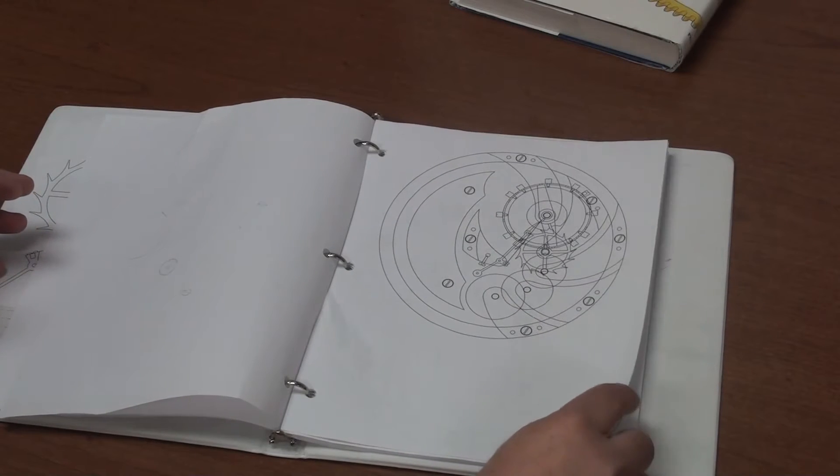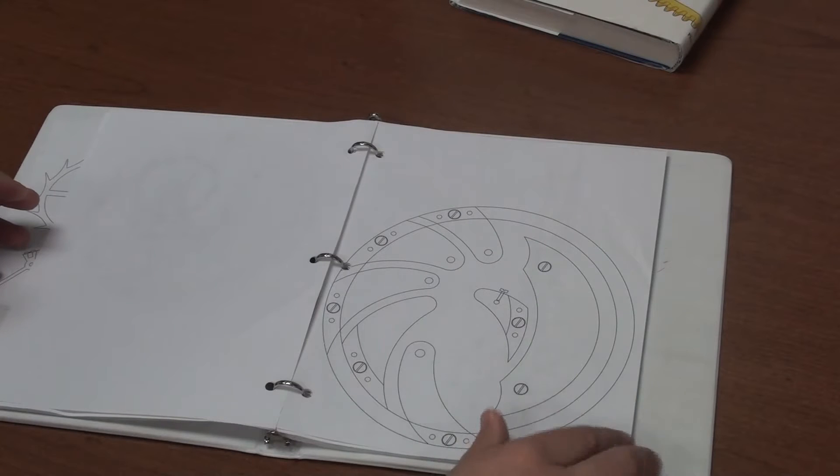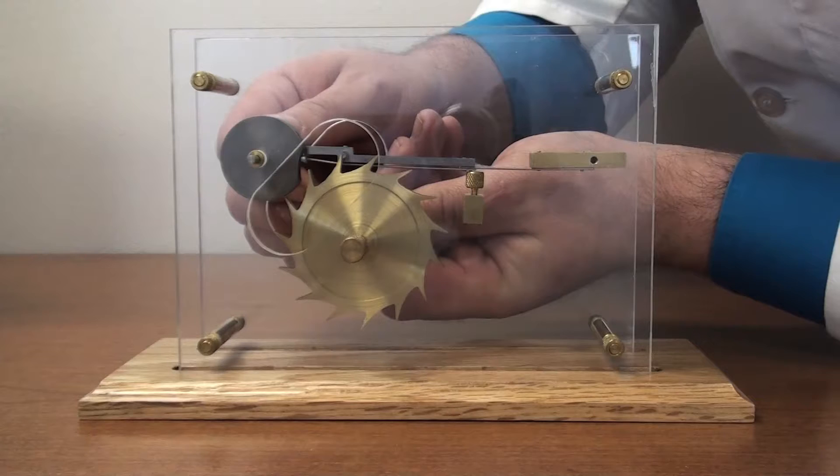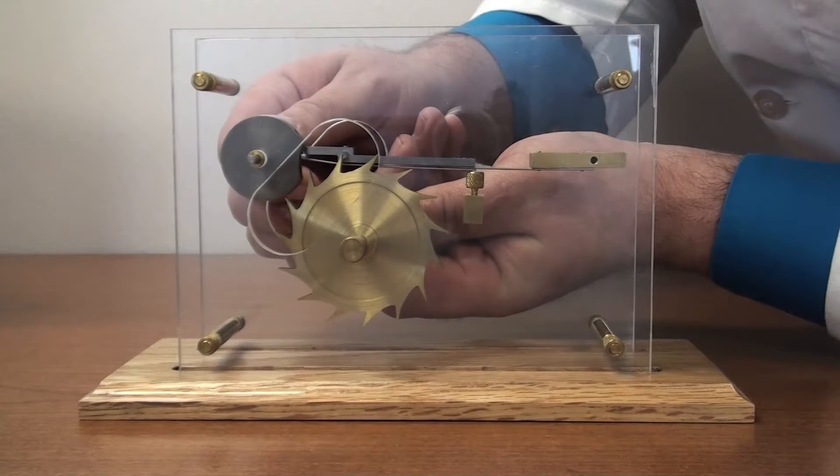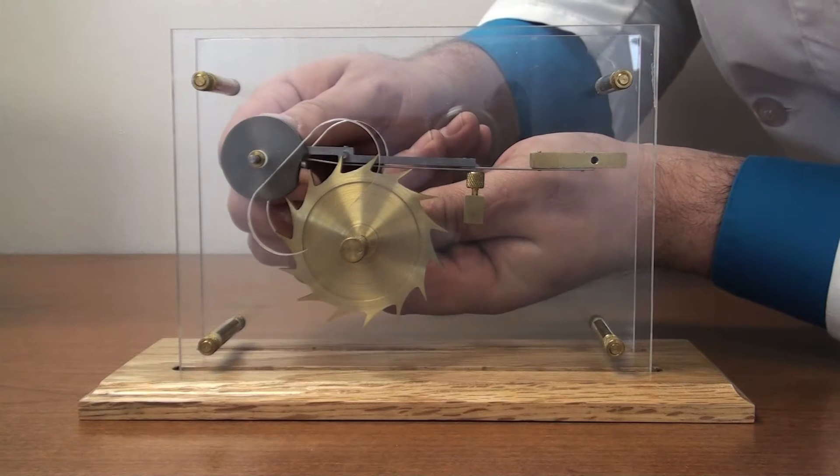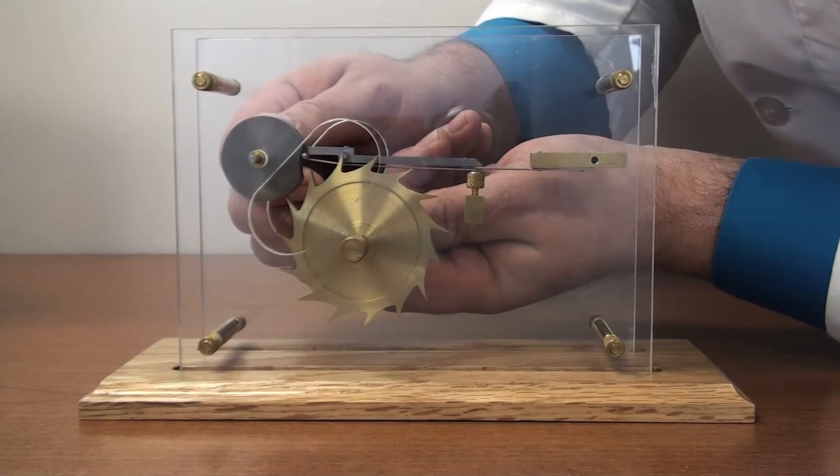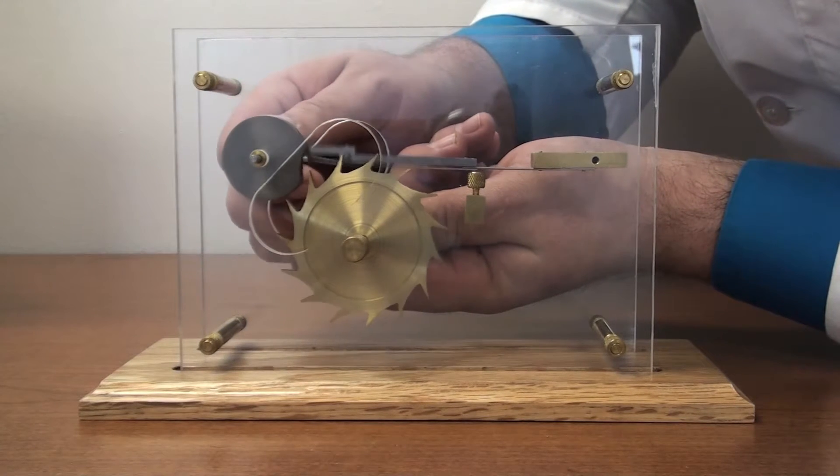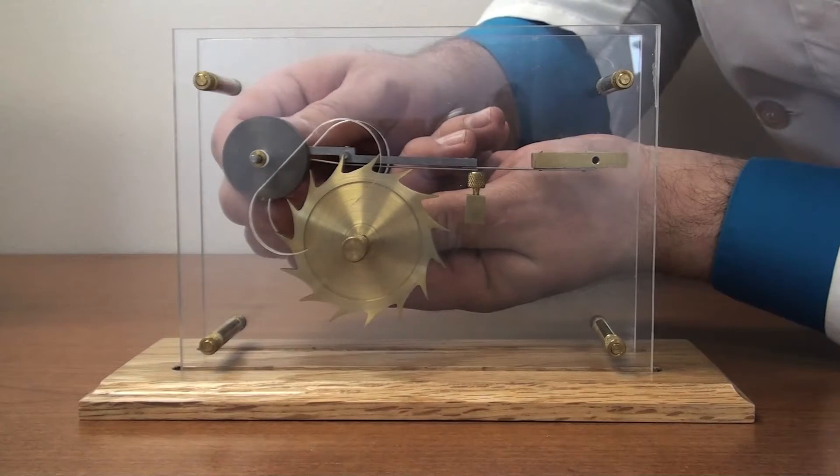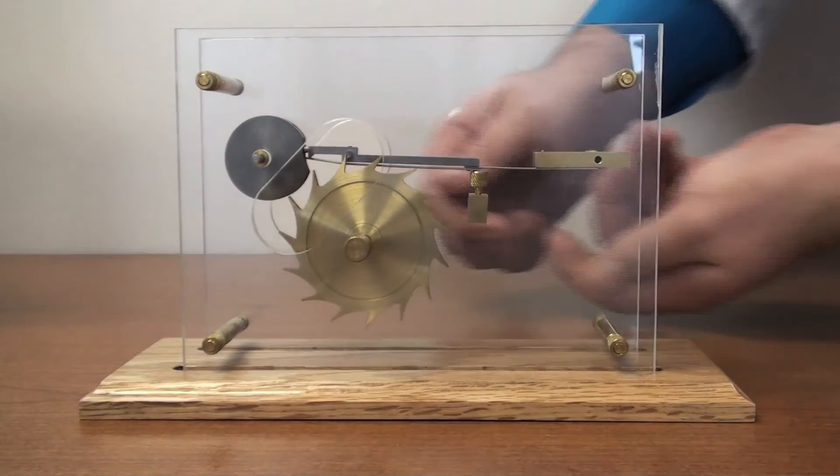The pivoted detent escapement is a really neat looking escapement that differs from a spring detent. One of our alumni made a spring detent model and has proven very useful to allow our students to be able to see a larger working model of an escapement other than what we normally see in a Swiss lever escapement.